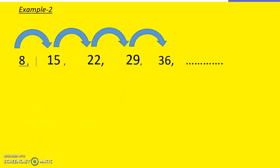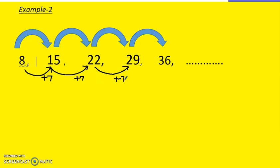Let me explain one more question: 8, 15, 22, 29, and 36. Let's see what the rule says. From 8 to 15 is plus 7, 15 to 22 is plus 7, 22 to 29 is plus 7, and so on. So the rule is plus 7.